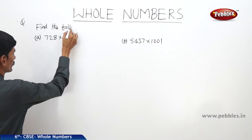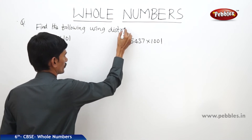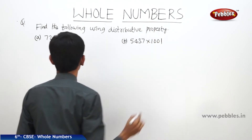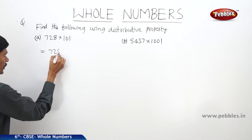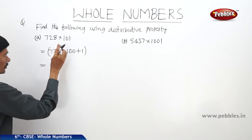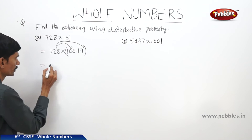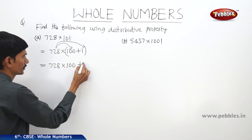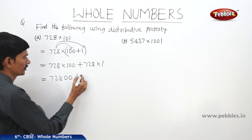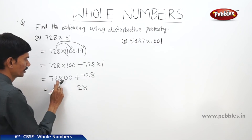Now let us find the following using distributive property. The first question is 728 into 101. This equals 728 into 100 plus 1. Using distributive property, we write 728 multiplied by 100 plus 728 multiplied by 1, which gives 72800 plus 728, equals 73,528.